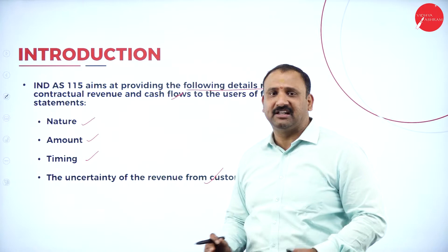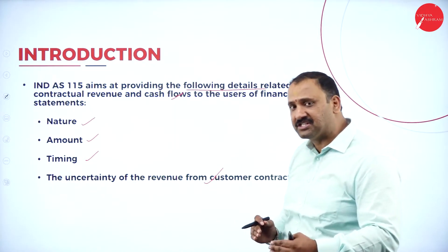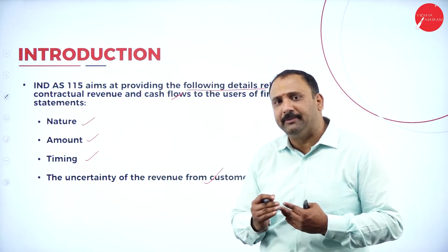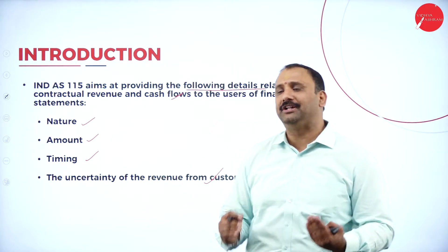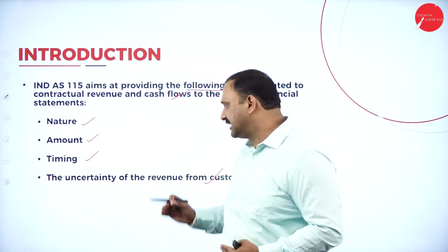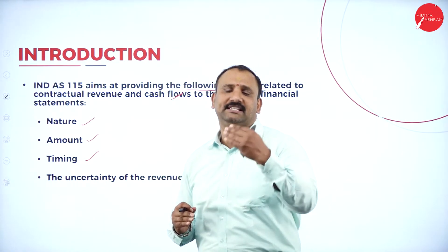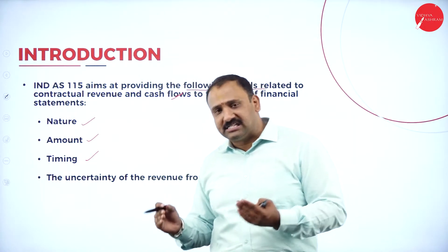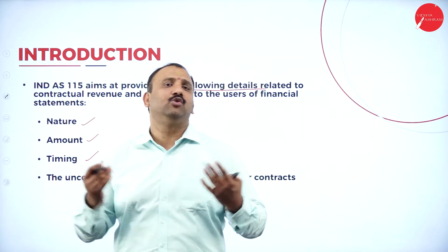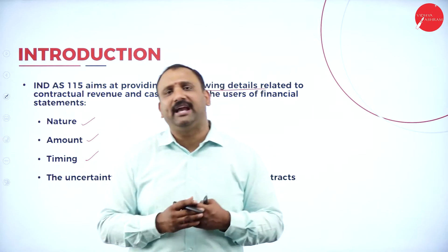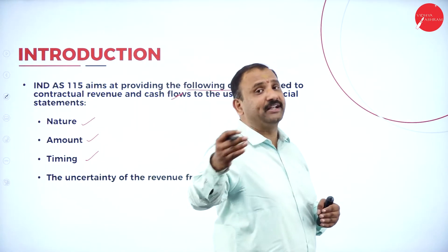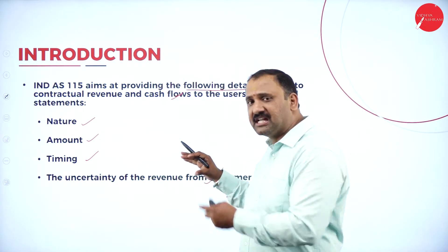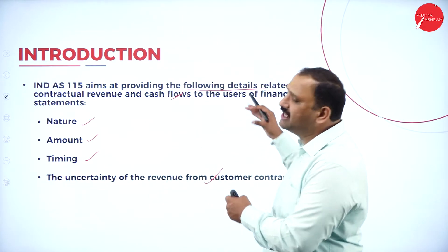The consulting firm will engage with its client under the following factors. The nature of consulting involved is finance and strategy. The amount - let's say the consulting is going to be worth 1 million dollars for the service they will provide. Timing is going to be 6 months - the business has to be completed within 6 months. And the uncertainty - if the customer says they are not happy and not getting fruitful results, they can immediately cancel it.